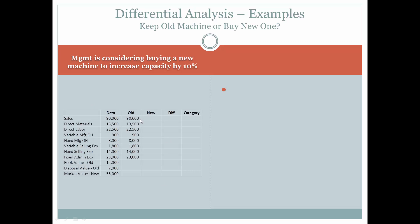Using the old machine, our sales will be $90,000, with direct materials, direct labor, variable manufacturing overhead, fixed manufacturing overhead, variable selling expenses, and fixed selling and administrative expenses. With the new machine that increases capacity by 10%, what is different is that sales have gone up by 10%, so the difference in revenue would be considered relevant in making a decision.